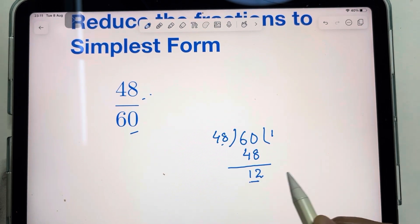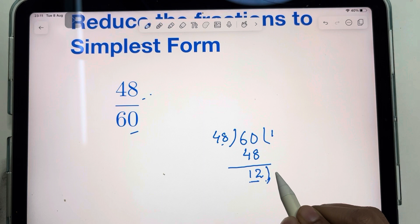Now use 12 to divide 48. This is how in division method you find highest common factor.